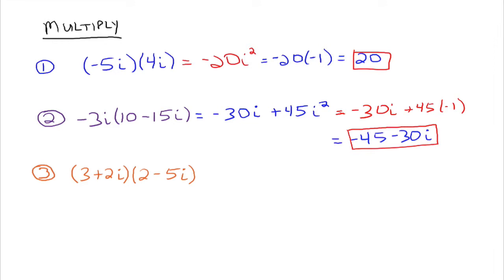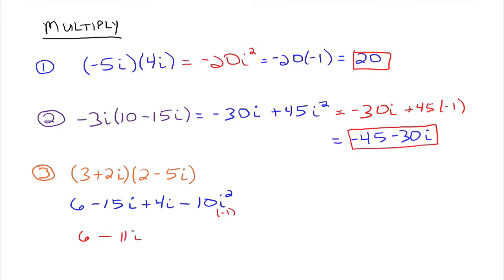Let's do one more. If you have a binomial times a binomial, we multiply it out using the distributive property twice. Distributing the 3 gives 6 minus 15i, then distributing the 2i gives plus 4i, and 2i times negative 5i is negative 10i squared. Since i squared is negative 1, that negative 10i squared becomes a positive 10. Combining the like terms negative 15i plus 4i gives negative 11i, and we have 6 minus 11i plus 10, which combines to 16 minus 11i.